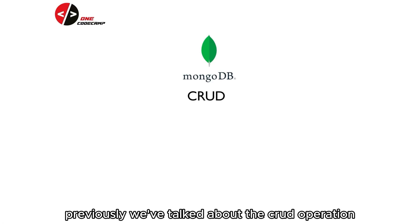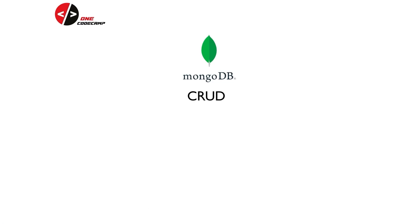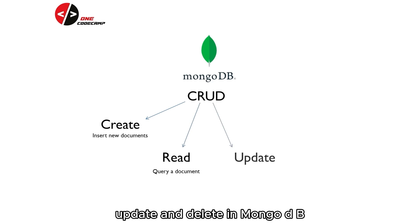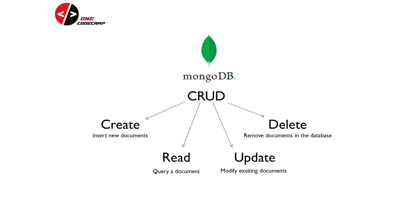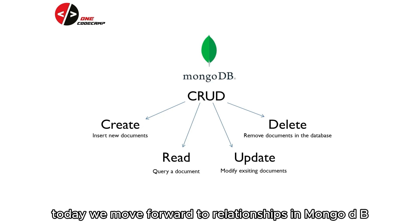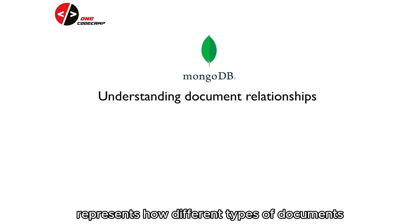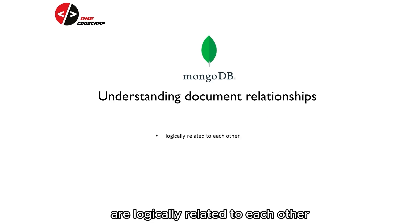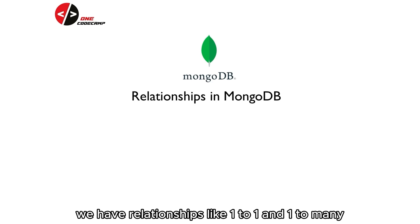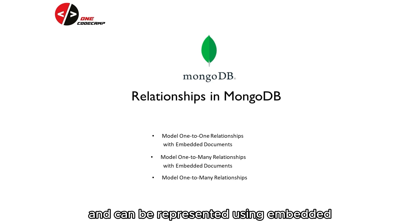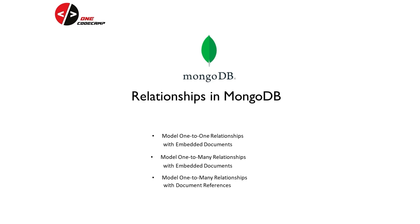Previously, we've talked about the CRUD operations in MongoDB. We've learned how to create, read, update, and delete in MongoDB using the MongoDB shell. Today, we move forward to relationships in MongoDB. A relationship represents how different types of documents are logically related to each other. We have relationships like one-to-one and one-to-many, and can be represented using embedded or reference model.